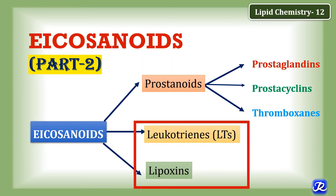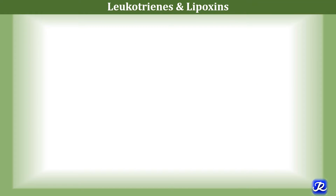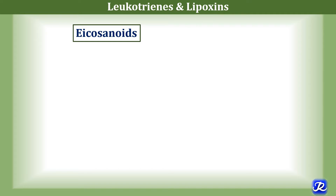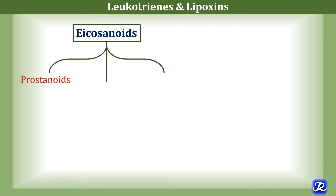Hello everyone. In this video we are going to learn about leukotrienes and lipoxins. They are eicosanoids — they contain 20 carbons; eicosa means 20. Eicosanoids are classified as prostanoids, leukotrienes and lipoxins.